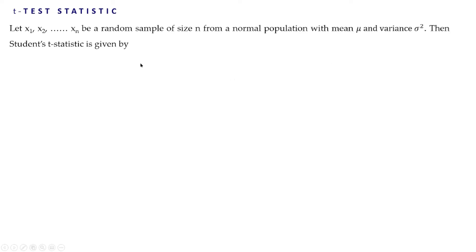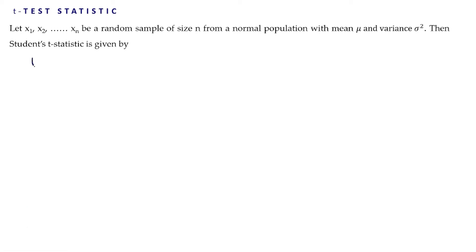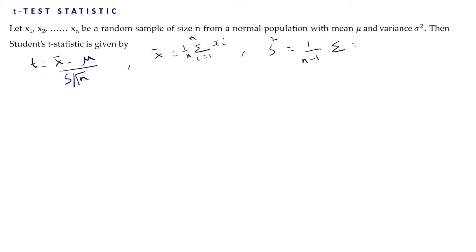As we have already seen, the t-test statistic is given as follows: let x1, x2, up to xn be a random sample of size n from a normal population with mean mu and variance sigma square. Then the Student's t-statistic is given by t = (x̄ - μ) / (S / √n), where x̄ is the sample mean = (1/n) × Σxi, and S² = (1/(n-1)) × Σ(xi - x̄)².